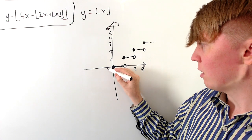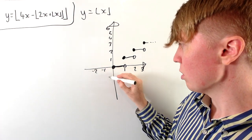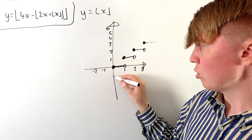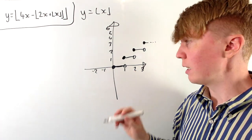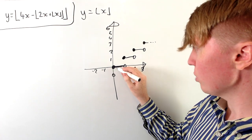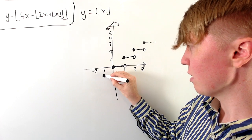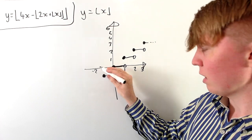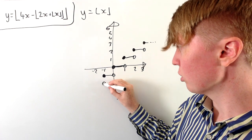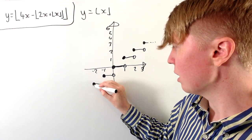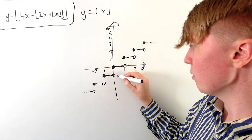Going into the negatives, if we go to just negative 0.1, the floor function gives negative 1 — so anything slightly less than 0 jumps down to negative 1. Then at negative 1.1, the floor function rounds down to negative 2, and the pattern continues like this for all negative values.